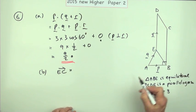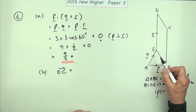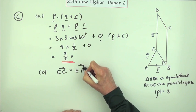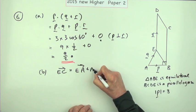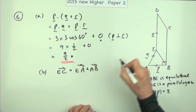By the time you've done that you're as well just saying how do you go from E to C, follow paths that you know. I'll go from E to A, then from A to B, then from B to C.